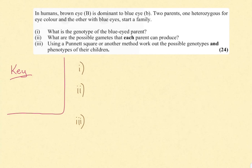In humans, brown eye, capital B, is dominant to blue eye, lowercase b. Two parents, one heterozygous for eye color and the other with blue eyes, start a family. What is the genotype of the blue-eyed parent?